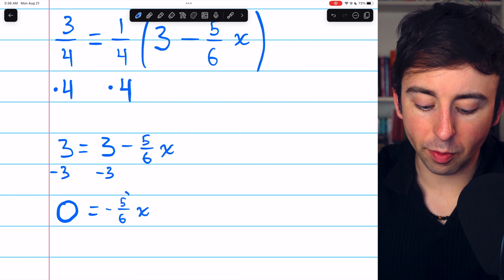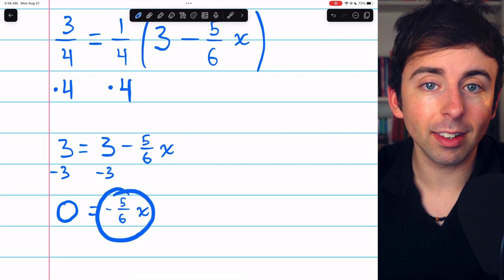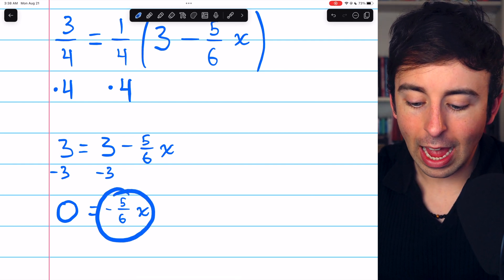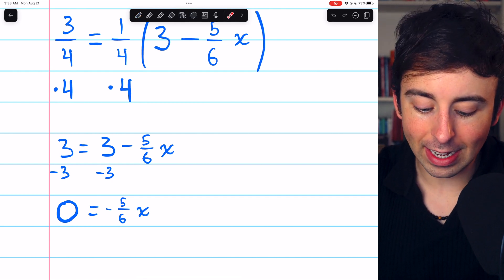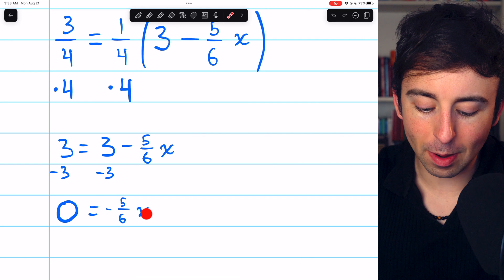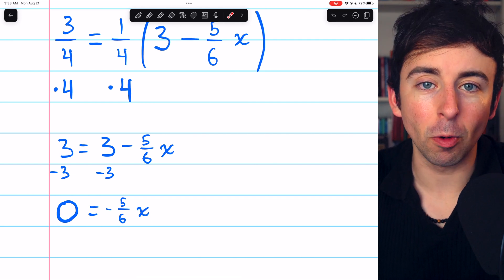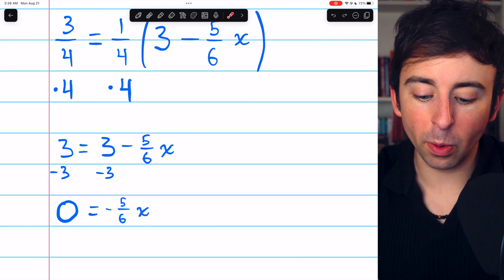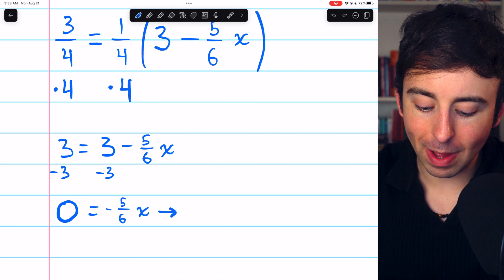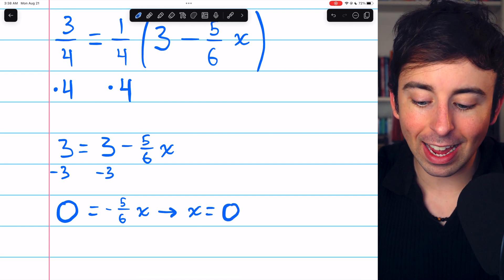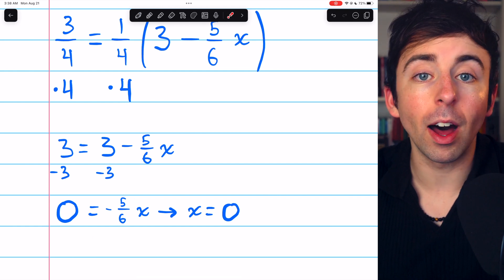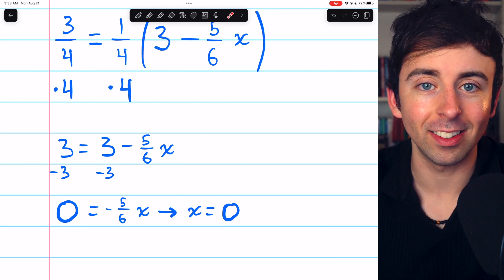Now we could worry about dividing by negative 5/6 to get rid of this coefficient. However, we don't really have to do that because this equation says negative 5/6 times x is 0. At a glance, you should know the only number that could possibly make this true is 0. If x was anything else, this equation could not possibly be true. So x is 0.